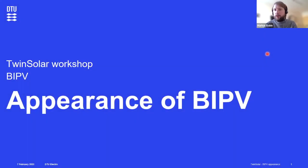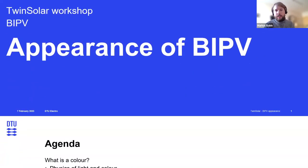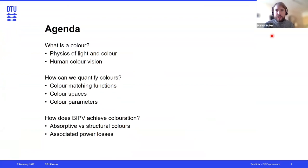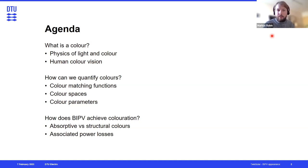I'm going to talk about two topics I've worked on a lot: appearance and glare from building-integrated photovoltaics. The agenda covers how we can describe colors quantitatively, how human color vision works, how color is created in BIPV systems, and what power losses are associated with them. This first section will be a bit technical, fair warning for that.